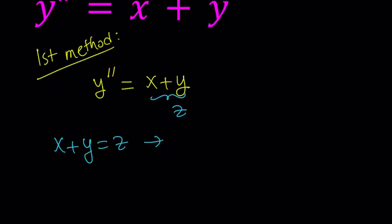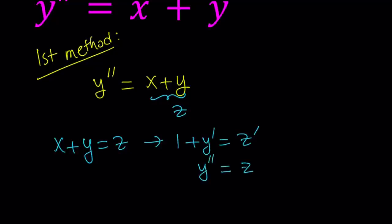If I differentiate both sides, remember we are differentiating everything with respect to x because y is a function of x. So when you add x to it, it's going to be a function of x, which we call z. The derivative of x with respect to x is just 1, so it's going to be 1 plus y prime equals z prime. Since I have the second derivative on the left-hand side, I'm going to differentiate one more time. The derivative of 1 is 0, and the derivative of the first derivative is just the second derivative, so this gives y double prime equals z double prime.